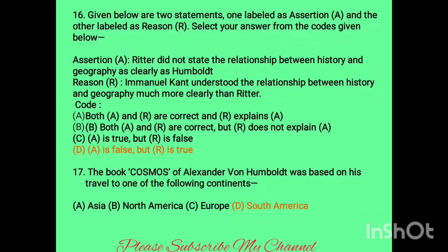Question sixteen is an assertion-reason question. Assertion: Ritter did not state the relationship between history and geography as clearly as Humboldt. This is incorrect because Ritter did state that relationship as clearly as Humboldt. Since the assertion is incorrect but the reason is correct, option D — 'A is false but R is true' — is the correct answer.